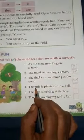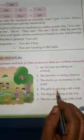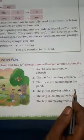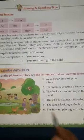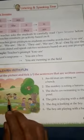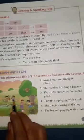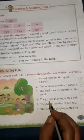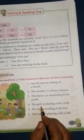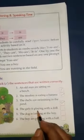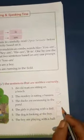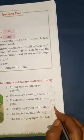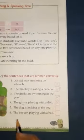Number four: The girls is playing with a doll. Girls means a plural naming word and here 'is' is used, so it is a wrong sentence.